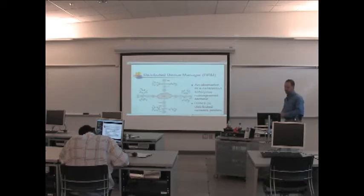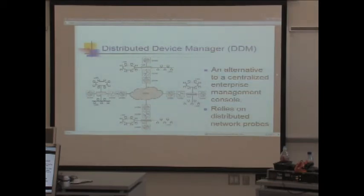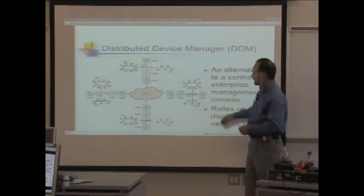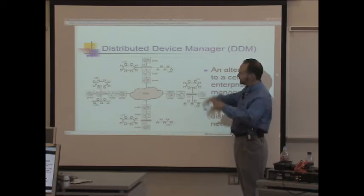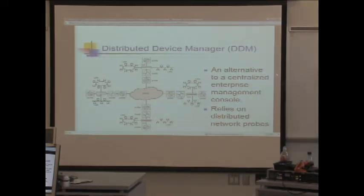An alternative to the centralized enterprise management console is the Distributed Device Manager, or DDM. It's more expensive than centralized approaches but relies on distributed network probes — an actual probe at each remote device captures data, carries it over the network, and distributes it to various management systems.